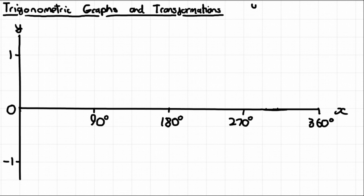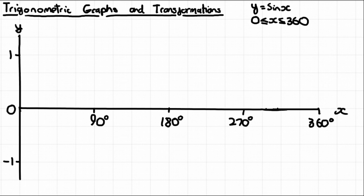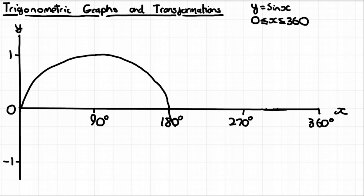Let's start with the sin graph: y = sin(x), in the interval 0 to 360 degrees. Starting from 0, the sin graph curves up to 1 at 90 degrees, then comes back down to 0 at 180 degrees. From 180 to 360 degrees it's the same shape but on the opposite side of the axis — it curves down to a minimum of -1 at 270 degrees, then back up to 0 at 360 degrees.